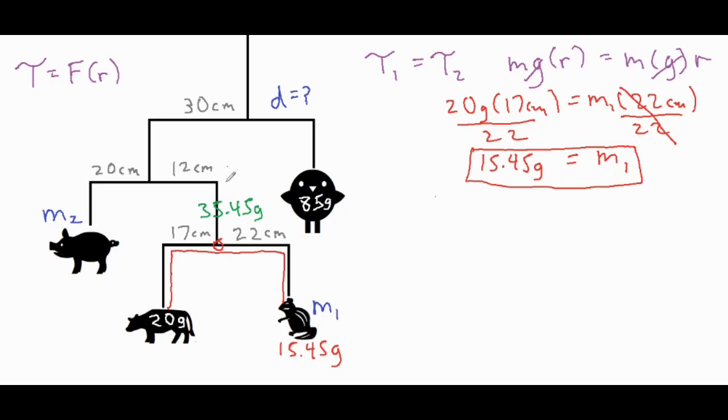Now we're going to do a second problem where we're going to take a look at this unknown m2 connected to our new 35.45 gram section, and then we're going to set it up just like we did here in red and see what we get for the unknown mass of the pig.